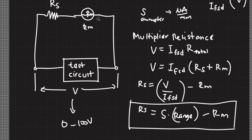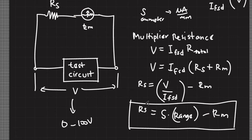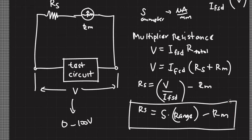In your lab experiment, to design a voltmeter you must first determine the internal resistance of your galvanometer, then calculate the multiplier resistance, and then design your own voltmeter. Interestingly, in the lab we provided three methods to determine the internal resistance of the galvanometer. You will try all three methods, get the average of the resulting values, and then design your own voltmeter.